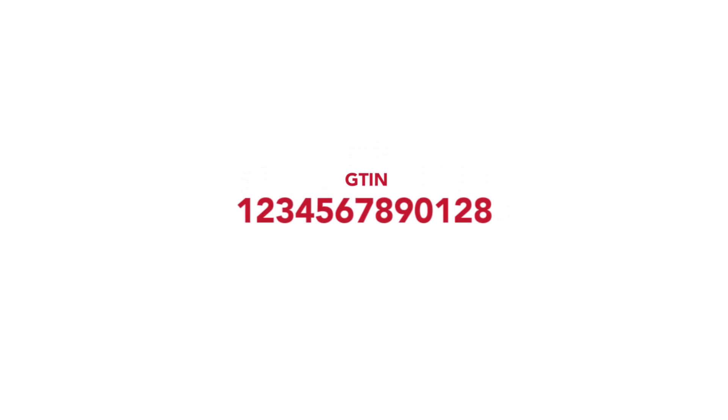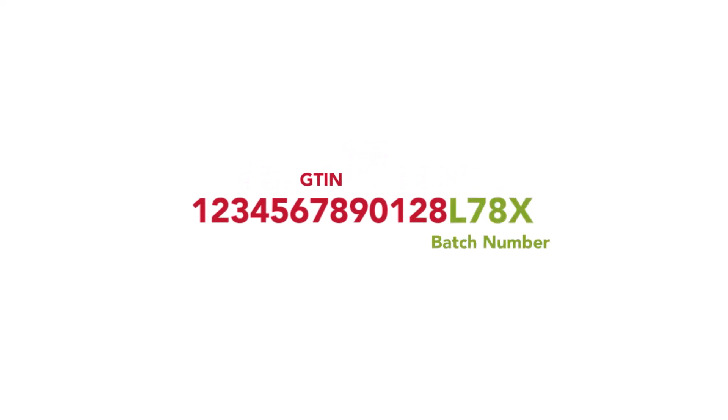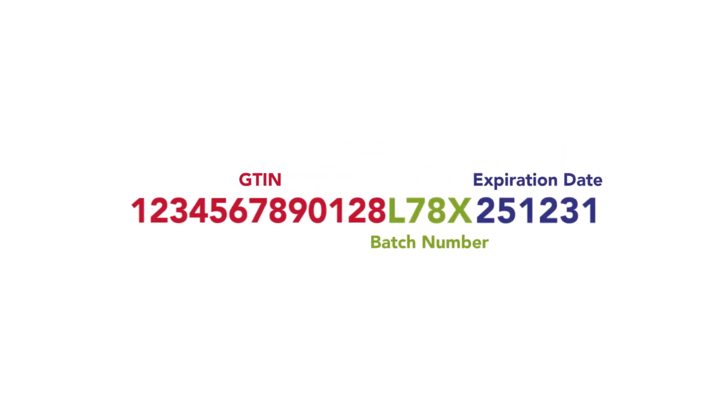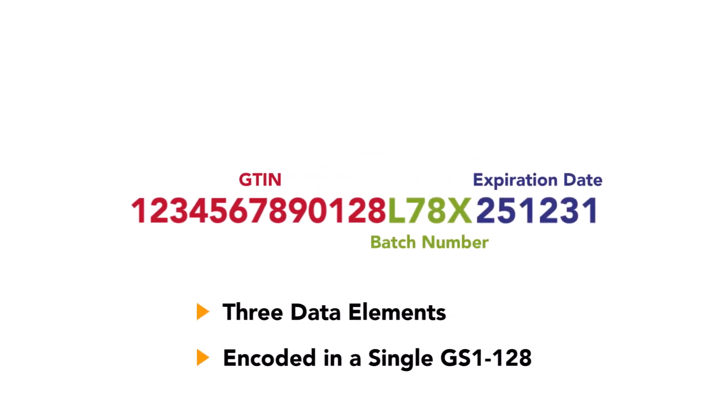Here's an example. Let's say you want to store a GTIN, a batch number with variable length, and an expiration date in a GS1-128 code.